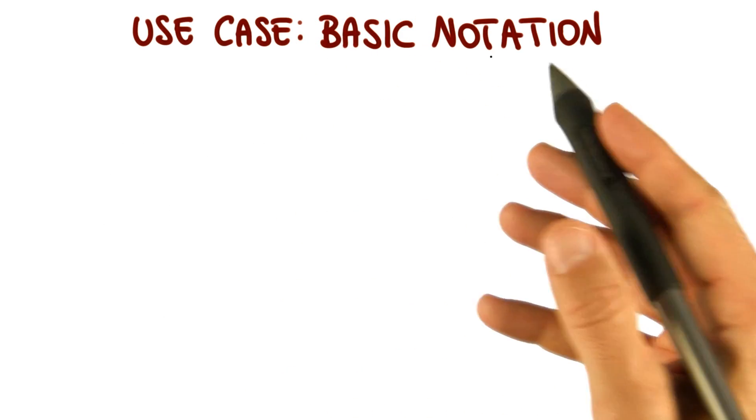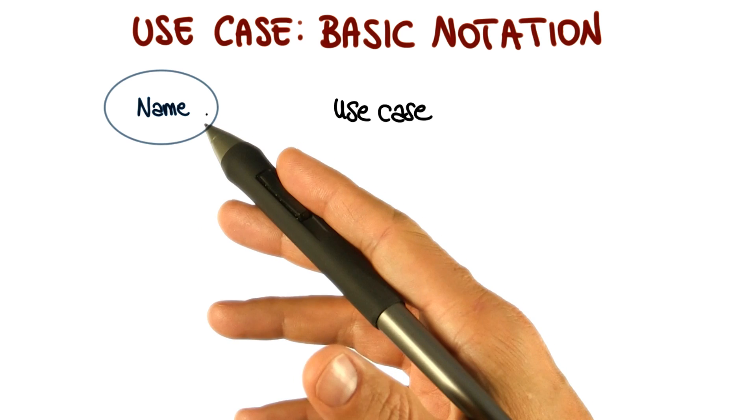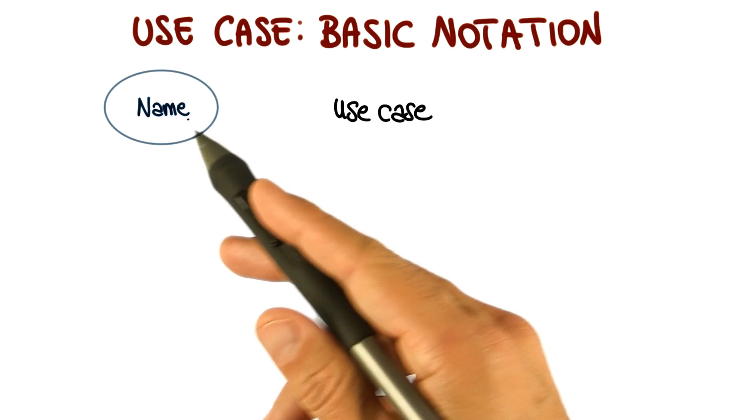Now let's look at the basic notation for a use case, which is fairly simple. We have a use case, which is represented by an oval, with a name, which is the name of the use case.